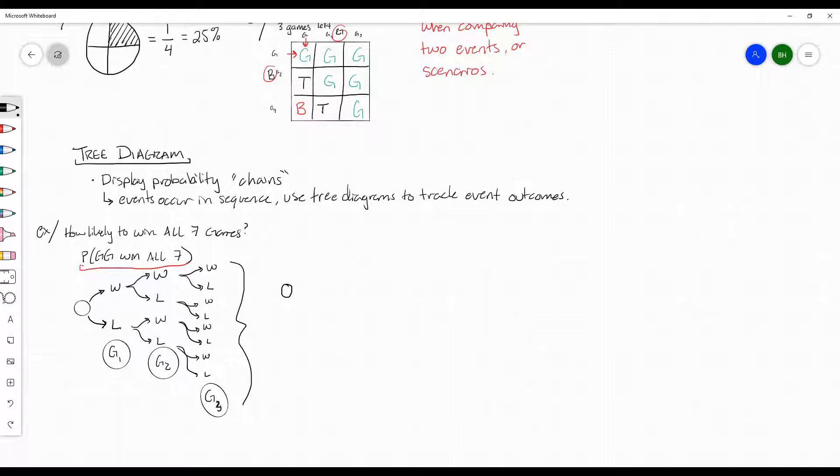So here I'm gonna have the good guys start somewhere. They play their first game, and we know that the probability that the good guys are gonna win a game is 0.62. So this win has a probability of 0.62.